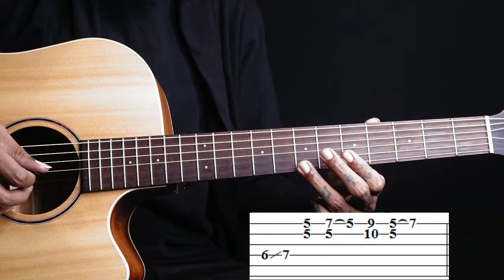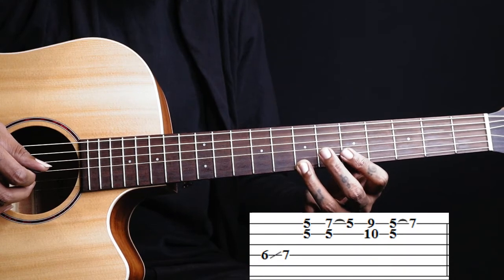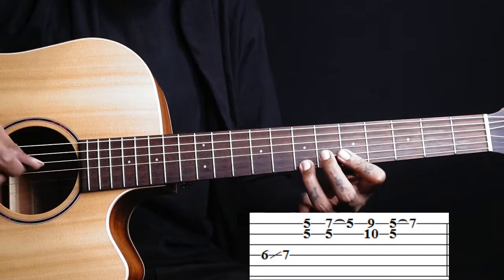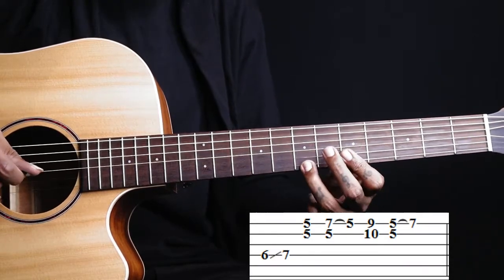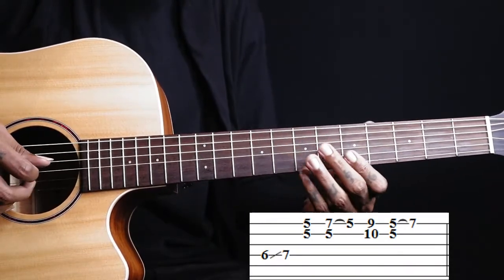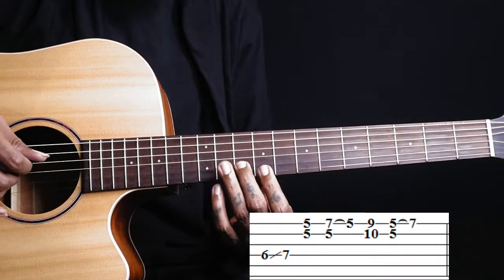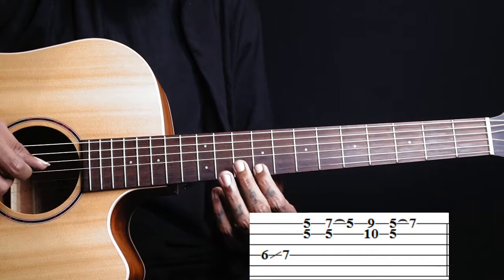Holding on the seventh fret of first string, keeping my first finger on the fifth fret of second string, pulling it back to fifth fret here. Then we jump to tenth fret on second string, ninth fret.